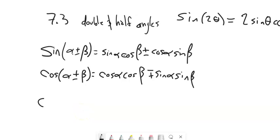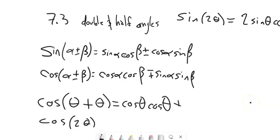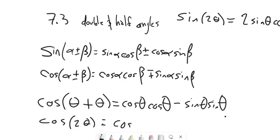We can do the same with cosine. Cosine of theta plus theta is the same as twice the angle, and expanding it using the sum formula gives us cosine theta times cosine theta minus sine theta times sine theta. So that's cosine squared minus sine squared.